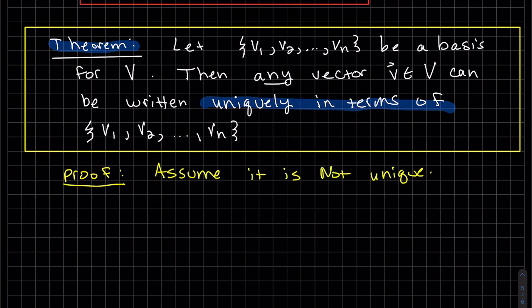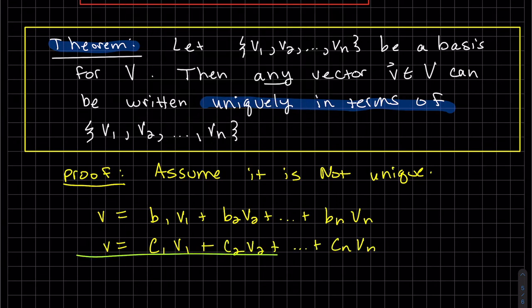So if we're assuming it's not unique, then we're saying we can write V out in two different ways where the coefficients are different. So we'll call one of them B1 coefficients. And then this one will be our C1 coefficients. So what we're going to do is we're going to subtract these two lines.